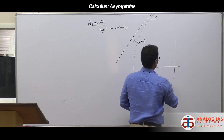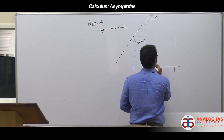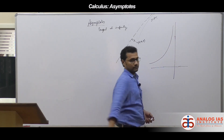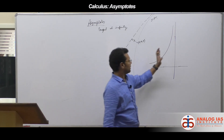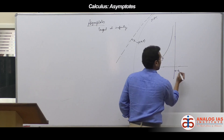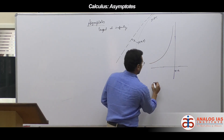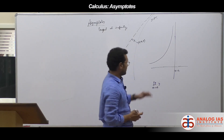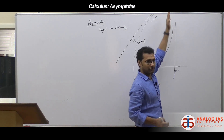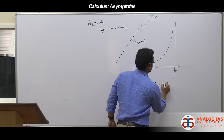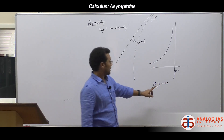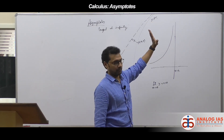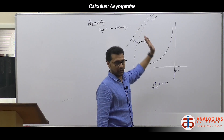For a vertical asymptote, sometimes the curve comes and goes like this — it keeps going. Suppose this line is x = a. If I try to find the limit as x tends to a of y, and y goes to infinity — suppose in this case it is plus infinity — then we call x = a as a vertical asymptote, which has infinite slope. Infinite slope asymptotes are vertical asymptotes.